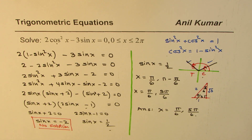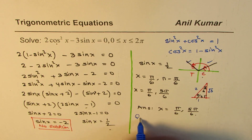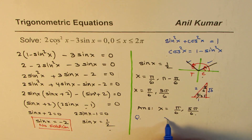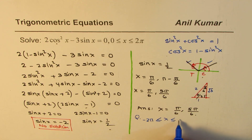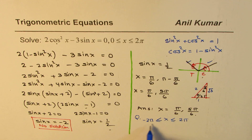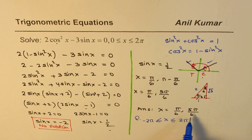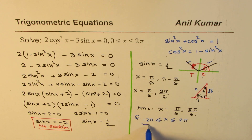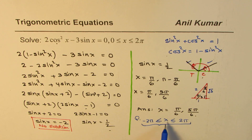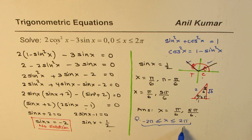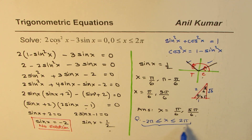Now here is a question for you. Same equation, but I want to change the domain. Instead of 0 to 2π, I want to make it minus 2π to 2π. That means you have to add a few more solutions. I'd like you to extend the solution so that it includes the modified domain, which has been increased from minus 2π to 2π. You can work out your solution within this domain.